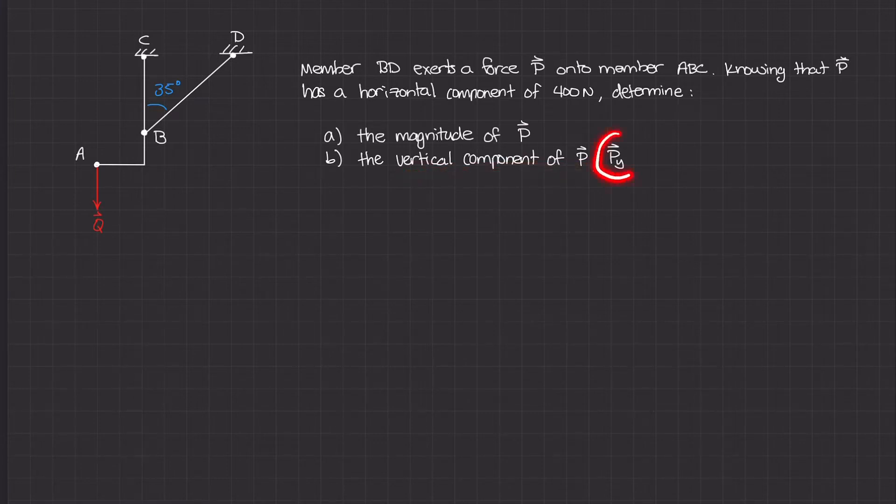We know that BD exerts force P onto member ABC, so the line of action is along the BD line. Because force Q is pulling downwards and ABC is staying stationary, we know that BD is pushing against ABC.